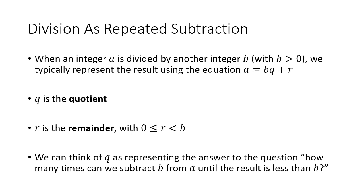We can think of division as repeated subtraction. When we have an integer a divided by another integer b, we typically require that the divisor is greater than zero. The number b that we're dividing by, we call that the divisor. And the number that we're dividing into is sometimes called the dividend.